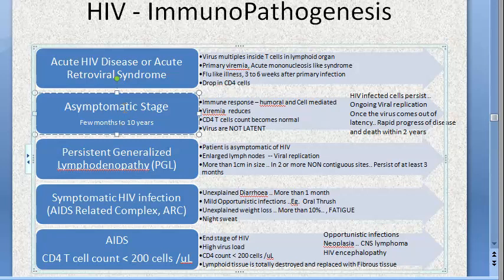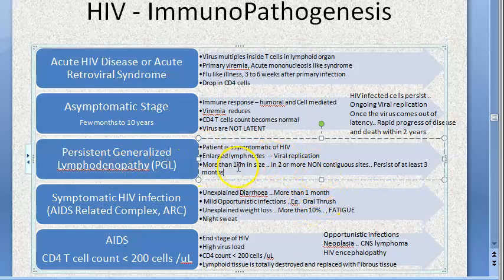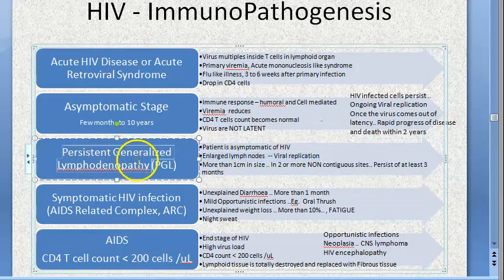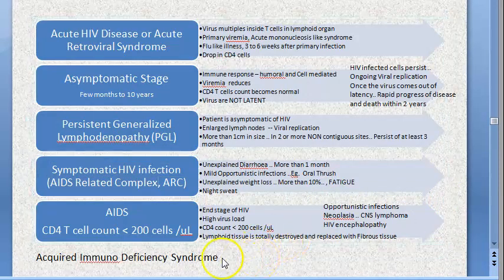The virus is multiplying inside lymph nodes, leading to lymphadenopathy. This is called Persistent Generalized Lymphadenopathy (PGL). In PGL the lymph node size becomes more than one centimeter, two or more non-contiguous lymph nodes are affected, and this lymph node enlargement persists for at least three months.